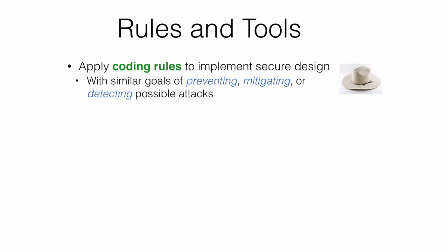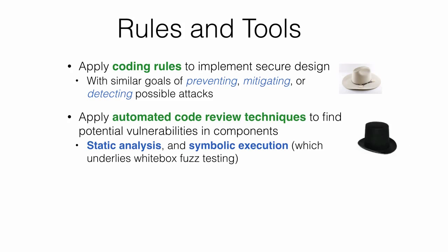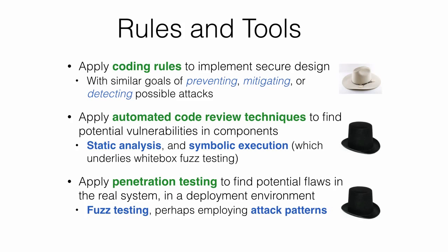The implementation and testing phase focuses on rules and tools — applying coding rules to implement secure design, and applying automated code review techniques to find potential vulnerabilities. A technique called static analysis analyzes a program and considers all its possible executions when making a judgment. The course also covers symbolic execution, a hybrid technique between static analysis and testing that underlies white box fuzz testing, as well as penetration testing to find potential flaws in real systems and fuzz testing to find failure scenarios.